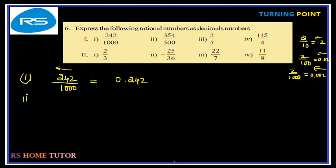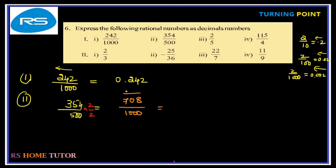Next, question number 2: 354 divided by 500. So what we will do - first we will multiply by 2 on both sides. I can do this; I am raising the numerator as well as denominator. So what I will get: 708 by 1000. So this we can convert easily after three decimals - three digits we have to put the decimal point.